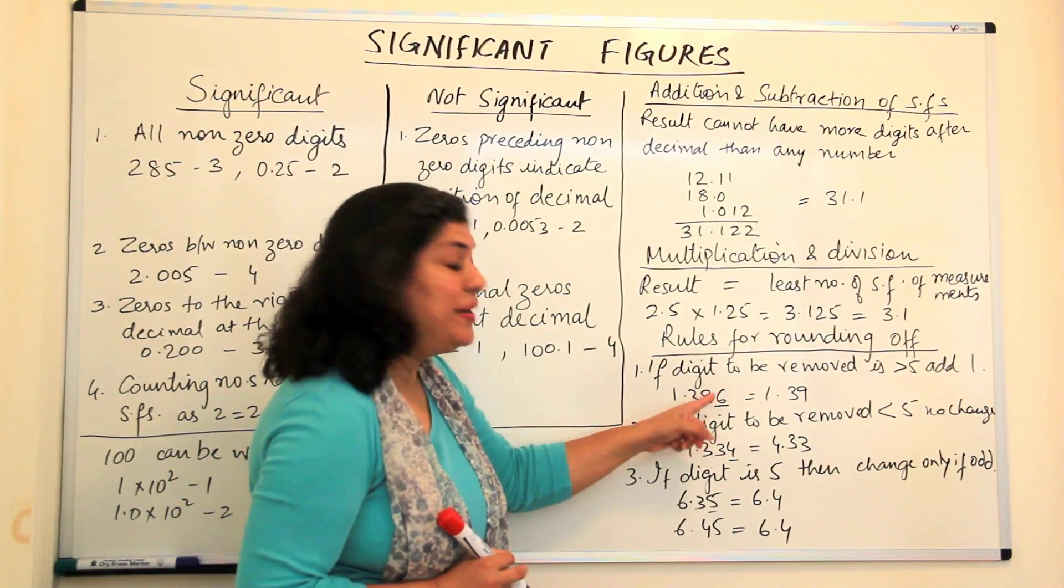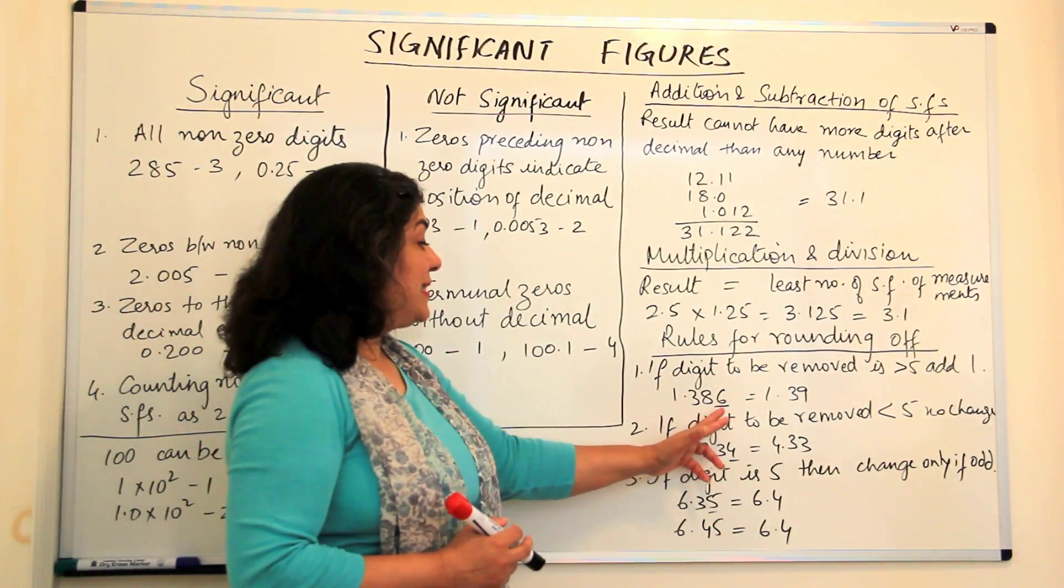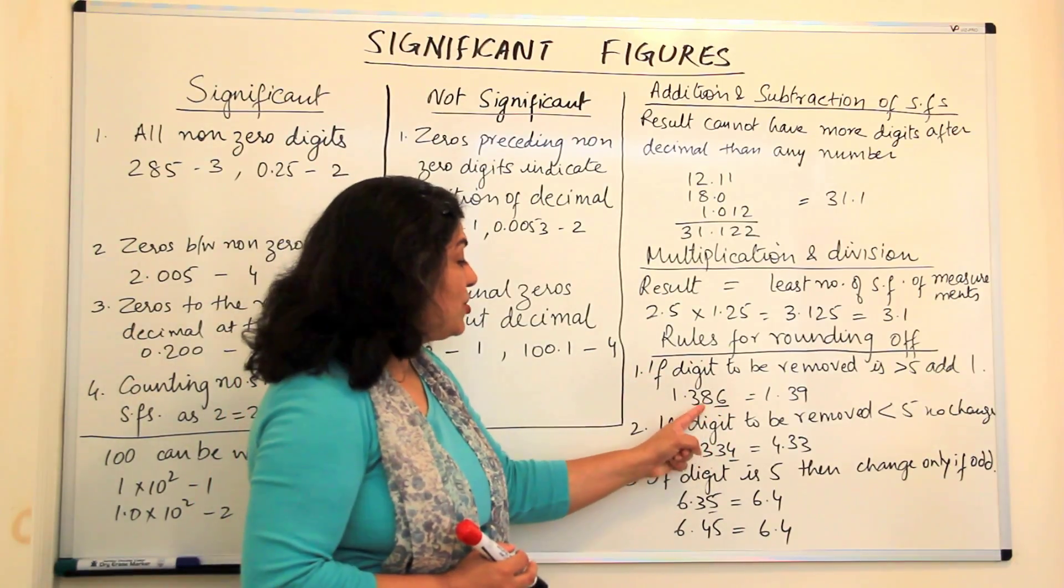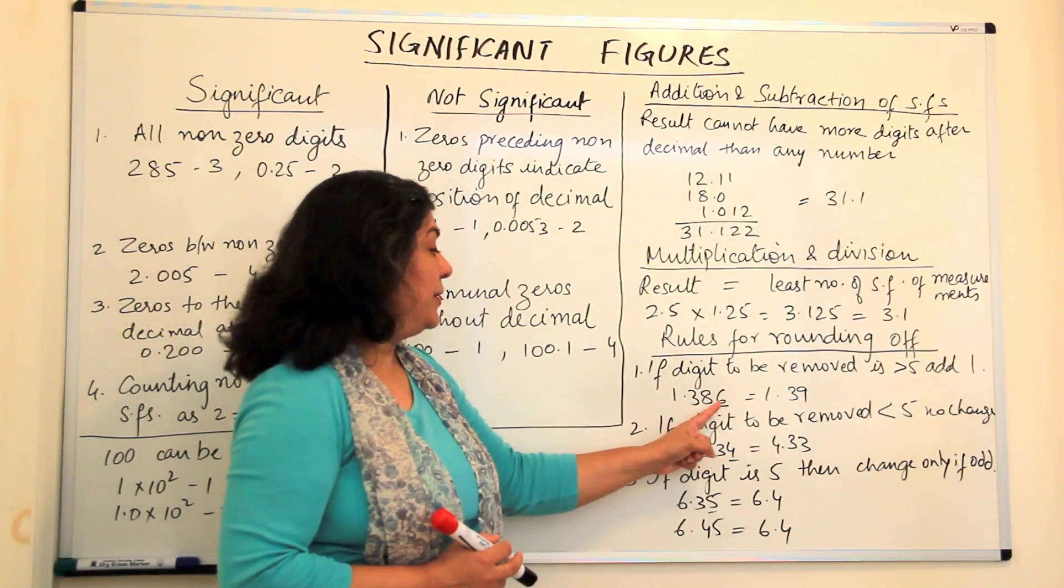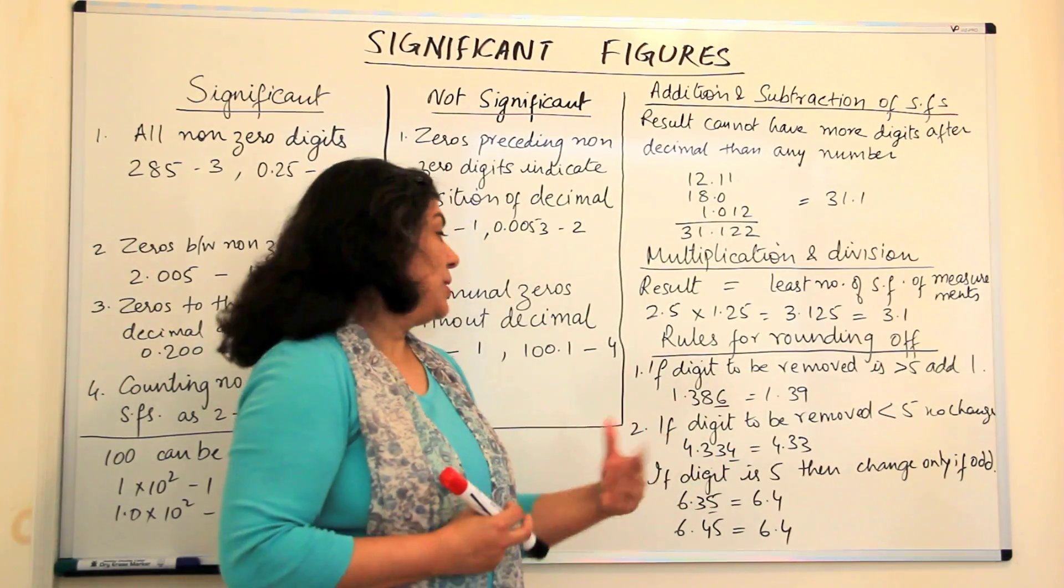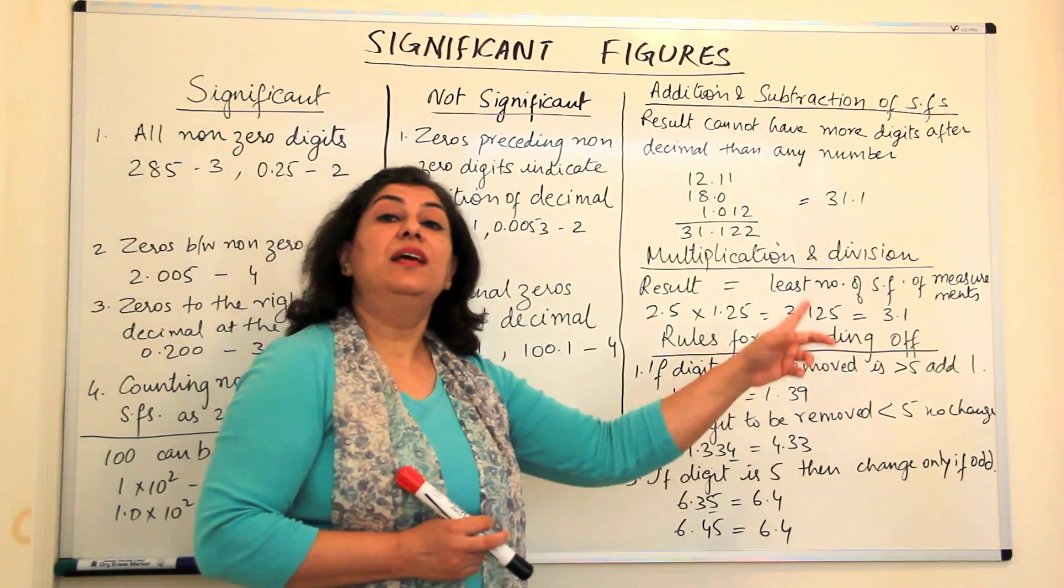If the last digit is greater than 5, for example, 1.386, 6 has to be dropped. But 6 is greater than 5, therefore when I am rounding off, I will increase one number, one digit here. So if this is 1.38, my answer or my reported calculation will be 1.39.